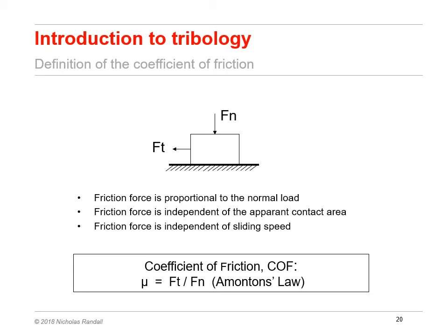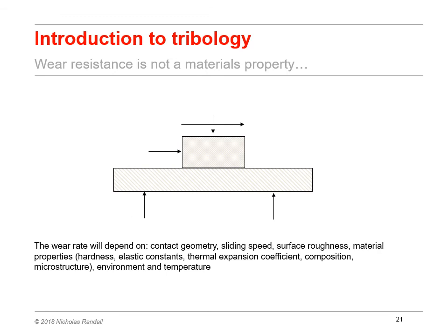The basic theory of friction starts with the definition of the coefficient of friction. This is defined as the ratio of the lateral or tangential force Ft to the applied normal force Fn. This is commonly known as Ammontons' law, even though we now know that Leonardo da Vinci had already proved it many years previously. Although the friction coefficient describes the sliding resistance between two surfaces under specific conditions, it does not tell us anything about the wear resistance of those materials in contact. The wear resistance is rather complicated and cannot be considered as a material's property. It will depend on a whole host of factors, including the contact geometry, sliding speed, surface roughness, material properties themselves, the operation environment and temperature.